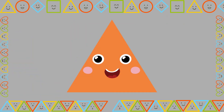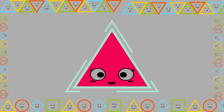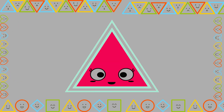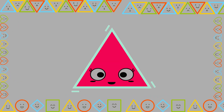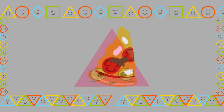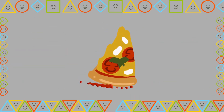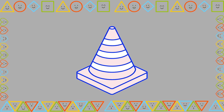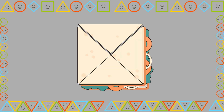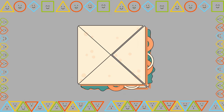Here's a fun shape. It's called a triangle. A triangle has three sides and three corners. Let's find some triangles around us. A slice of pizza is a triangle shape, and traffic signs and sandwiches can also be triangles.